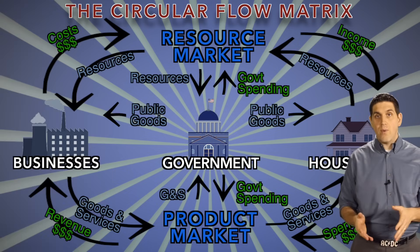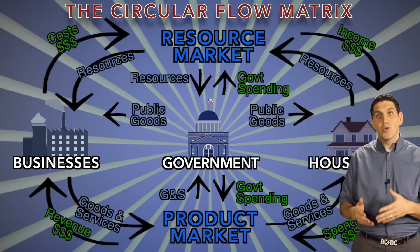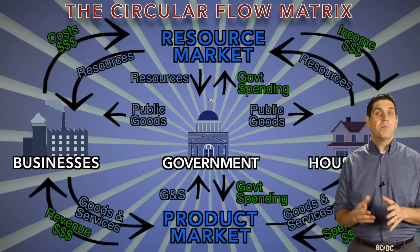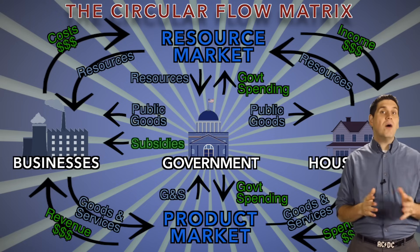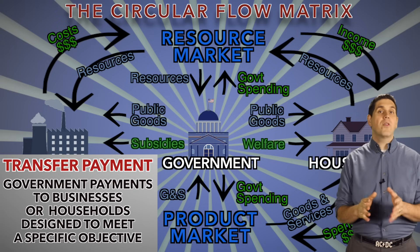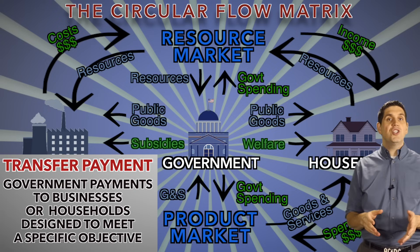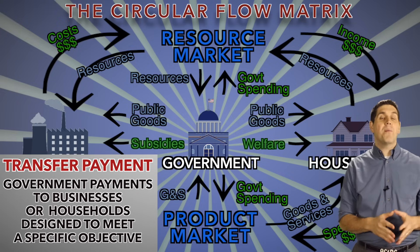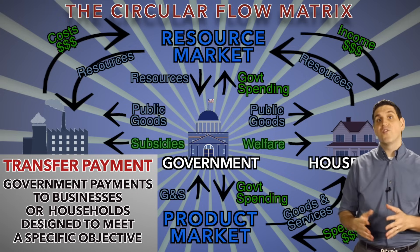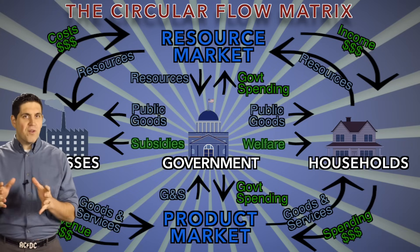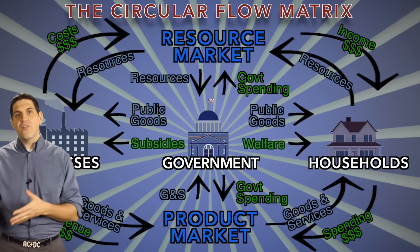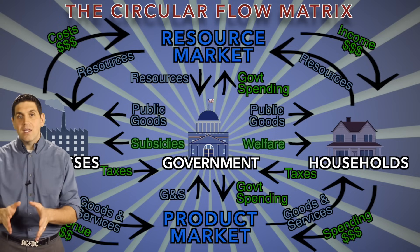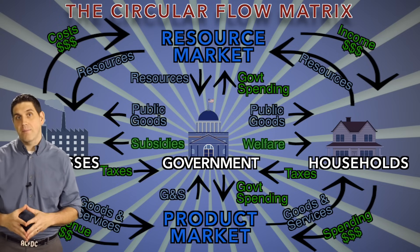The government then turns around and provides public goods and services, like fire protection, schools, roads, and bridges, to businesses and households. The government also pays money to businesses, called subsidies, or to households, called welfare — economists call those transfer payments. There are situations when the government is giving out money but not for goods and services; it's to meet some other objective, like to alleviate poverty or get companies to produce more fuel-efficient cars. But how does the government afford to provide public goods and welfare and subsidies? Well, they tax businesses and households. Income taxes and sales taxes fund government projects and programs.